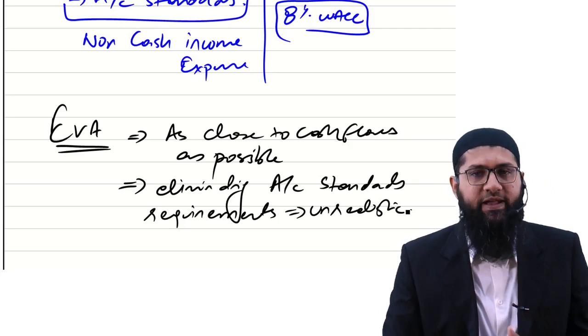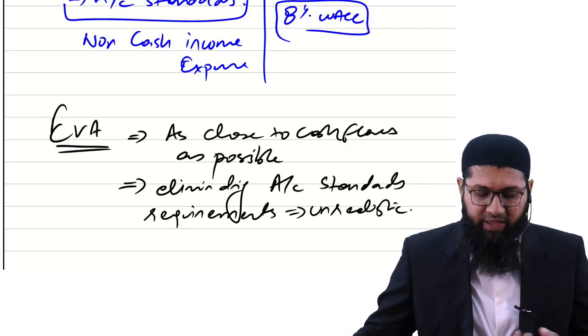As a result, the EVA technique was introduced. The agenda was that EVA has to be as close to cash flows as possible, and it should eliminate accounting standards requirements which are possibly unrealistic.